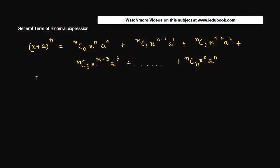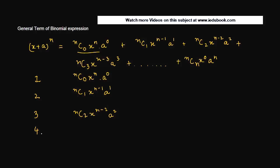Now let us write down the first, second, third, and fourth terms of the expansion. The first term is nC0 · x to the power n · a to the power 0. The second term is nC1 · x to the power n minus 1 · a to the power 1. The third term is nC2 · x to the power n minus 2 · a to the power 2. The fourth term is nC3 · x to the power n minus 3 · a to the power 3.